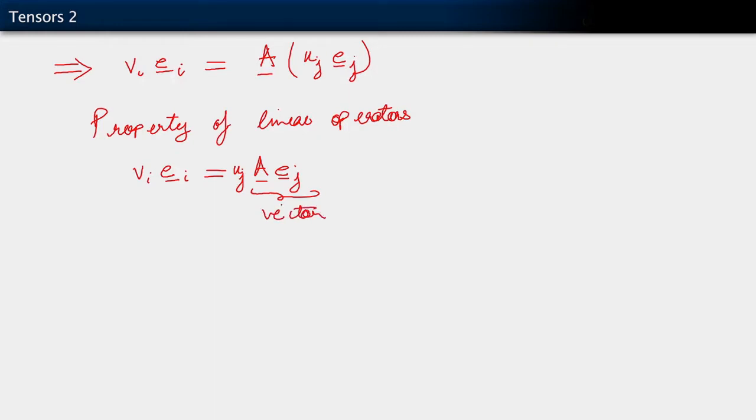Well, if it's a vector, if A E_j is a vector, I can write out an expansion for it in terms of the basis. I can write out this vector also in terms of its components. And I'm going to do that right now. I'm going to expand it in the same basis. Again, I'm going to introduce new indices here. I'm going to use E sub L.